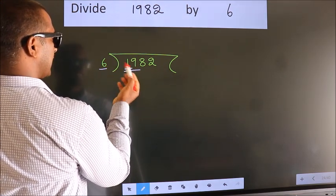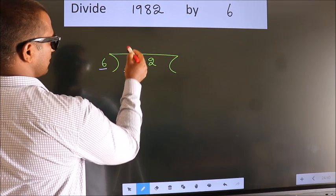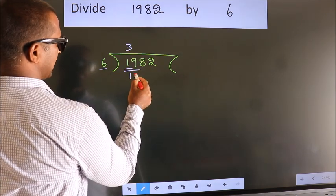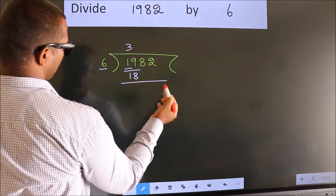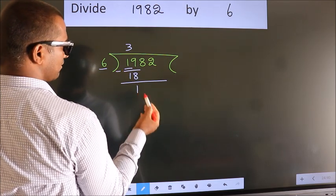A number close to 19 in 6 table is 6 threes, 18. Now we should subtract. We get 1.